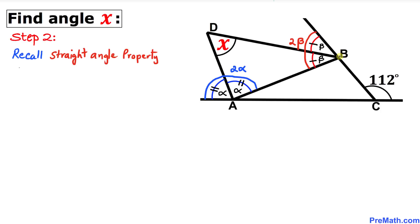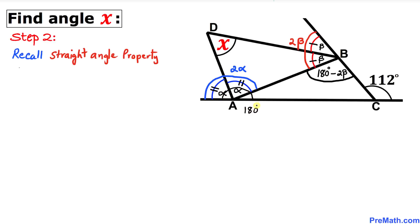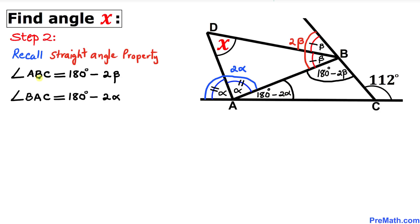Now let's recall the straight angle property. That means this whole angle is 180 degrees. We know that this whole angle is 2 beta, so this angle has to be 180 minus 2 beta. Likewise, on these blue angles, this whole angle is 180 degrees, and we know this whole angle is 2 alpha, so this angle is going to be 180 degrees minus 2 alpha. Thus our angles turn out to be: angle ABC equals 180 minus 2 beta, and angle BAC equals 180 degrees minus 2 alpha.